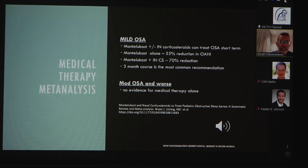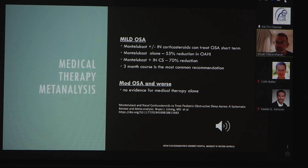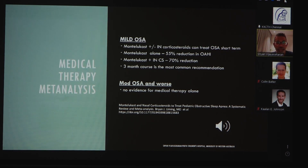For mild OSA, we should not forget the use of montelukast and intranasal corticosteroids. The majority of IPOG experts recommended a trial of at least montelukast alone, or montelukast and intranasal corticosteroids, for at least a three-month course. In children with moderately severe OSA or worse, there is no evidence for medical therapy alone, and in these patients one should consider surgical intervention in the first instance.